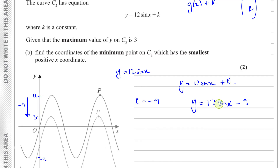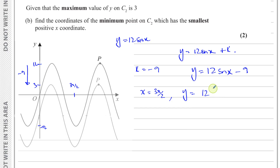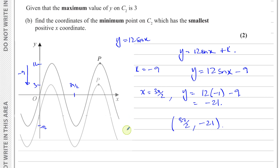We want the coordinates of the minimum point on C2 with the smallest positive x coordinate. There's no horizontal displacement — only vertical — so the minimum x coordinate is still at 3π over 2. At that point, y equals 12 times sine of 3π over 2, which is minus 1, minus 9 — giving minus 21. So the coordinates are (3π over 2, −21). Everything's gone down: the minimum was −12, now it's gone down by another 9 to become −21.